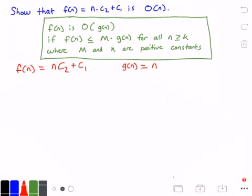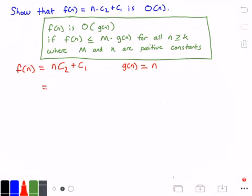What we're going to do is rewrite the equation from our definition and try to find a value k and m that makes this statement true for our functions f of n and g of n. So we get: n times c₂ plus c₁ is less than or equal to m times n, for all values of n greater than or equal to some constant value k.